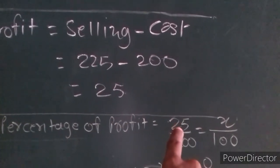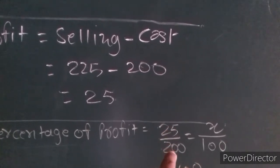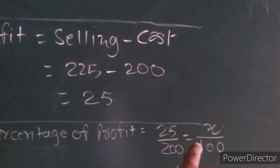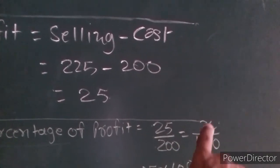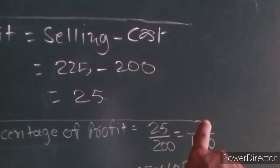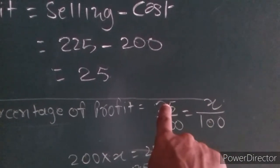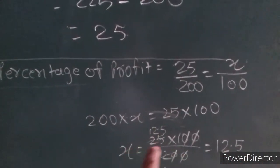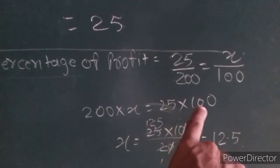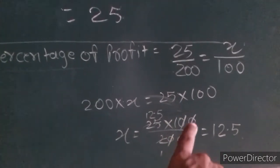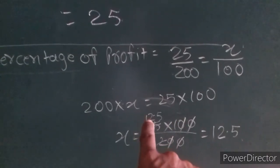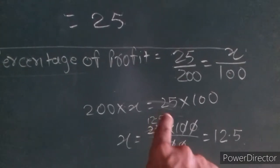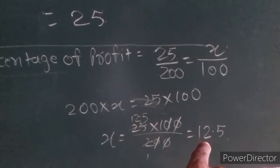Percentage of profit: if we got Rs 25 profit on a cost price of Rs 200, then if the cost price is Rs 100, how many rupees profit? Cross multiplication: 25 into 100 divided by 200. Cancelling zeros: 25 divided by 2. Dividing gives 12 and a remainder of 1, which becomes 10, so 2 fives are 10, giving 12.5. So the percentage of profit is 12.5%.